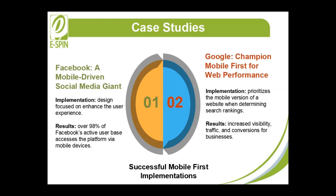Google, championing mobile-first for web performance, has long been a strong advocate of the mobile-first approach, recognizing the importance of mobile usability in the digital landscape. Google implemented mobile-first indexing, which prioritizes the mobile version of a website when determining search rankings. This shift encouraged web developers to adopt mobile-first strategies to maintain or improve their search engine rankings, leading to increased visibility, traffic, and conversions for businesses that have prioritized mobile usability.